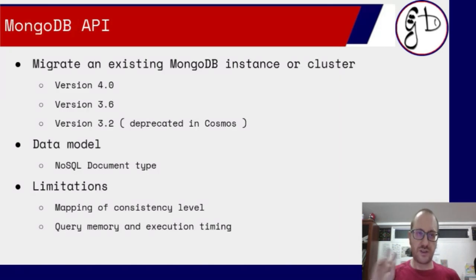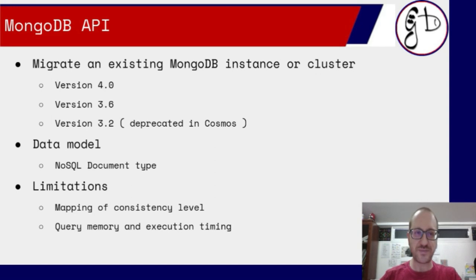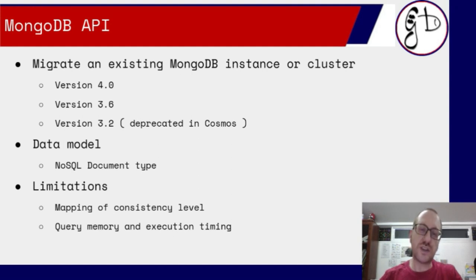The second API is the MongoDB API. With it, you interact with Cosmos DB as if it were a MongoDB cluster. This API is very useful when you need to migrate an existing MongoDB instance or cluster. Cosmos DB supports versions 4.0, 3.6, and 3.2, but 3.2 is going into deprecation, so please choose at least 3.6, or the latest version if starting fresh.